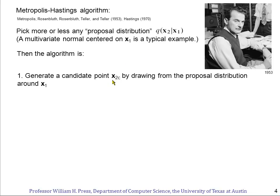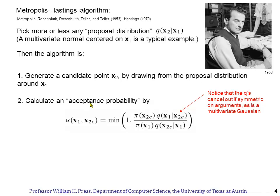And pretty much any proposal distribution is okay. A typical one would be a multivariate normal distribution centered on X1, and it tells with what probability that we'll make a step in the various directions of the multivariate normal to a location X2. Then the algorithm using this proposal distribution is the following. Generate a candidate point for X2 labeled X2C by starting at X1 drawing from the proposal distribution, the q. That's easy enough.